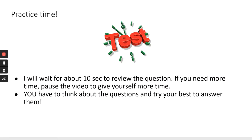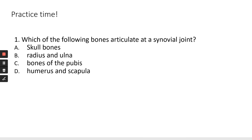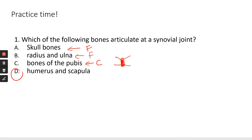Practice question one for joints: Skull bones — remember the sutures — that's a fibrous joint. Radius-ulna is also fibrous. Bones of the pubis — that's the cartilaginous joint, with two pubic bones and a disc of fibrocartilage in the middle. The correct answer is the last one: the humerus and scapula, which is your shoulder joint, and the shoulder is a type of synovial joint.